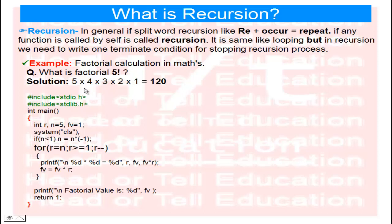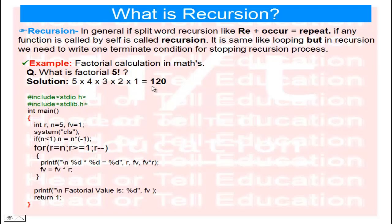What is factorial 5 in maths? If we have the number 5, the factorial value is 5 multiplied by 4, multiplied by 3, multiplied by 2, multiplied by 1, which equals 120. Any number is multiplied by decreasing values one by one — like 5, 4, 3, 2, 1. For factorial 10, it would be 10, 9, 8, 7, and so on, all multiplied together.